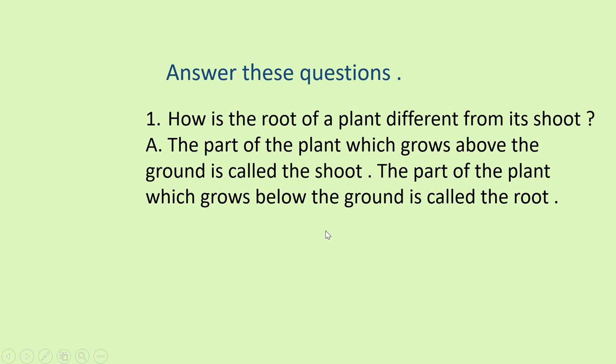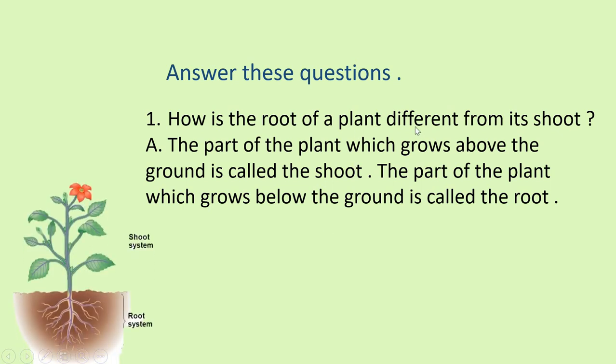So, first question, how is the root of a plant different from its shoot? See here in the picture also, the part of the plant which grows above the ground. See here, above the ground is called shoot. The part of the plant which grows below the ground. See this part? So, it is called the root.